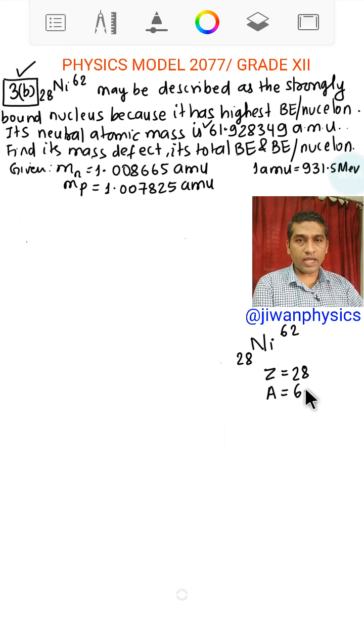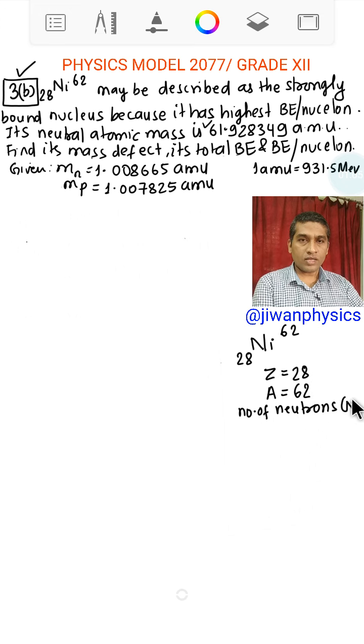The value of A is 62 and number of neutrons N equals A minus Z, so N equals 34.